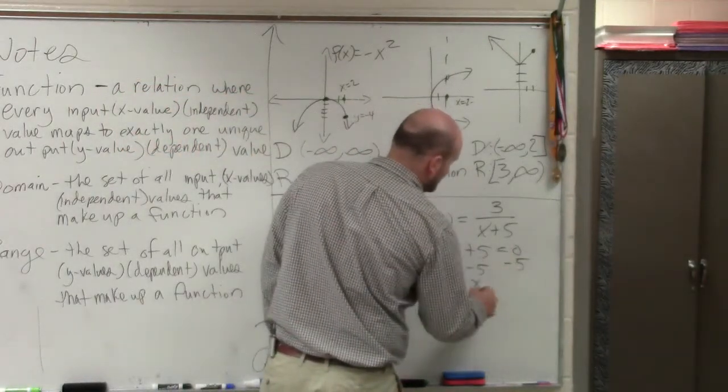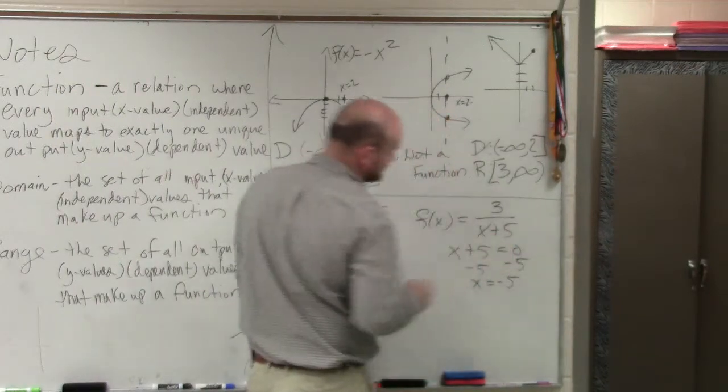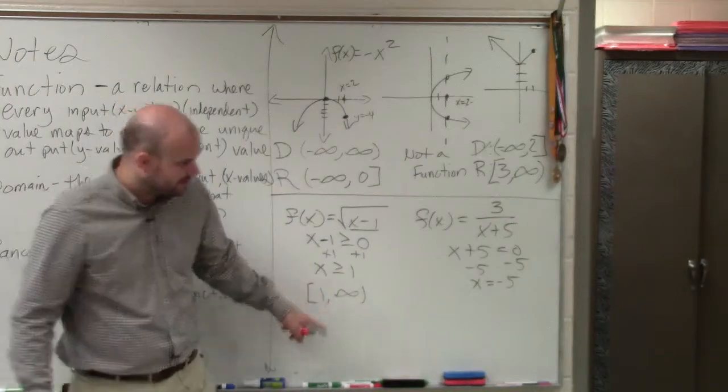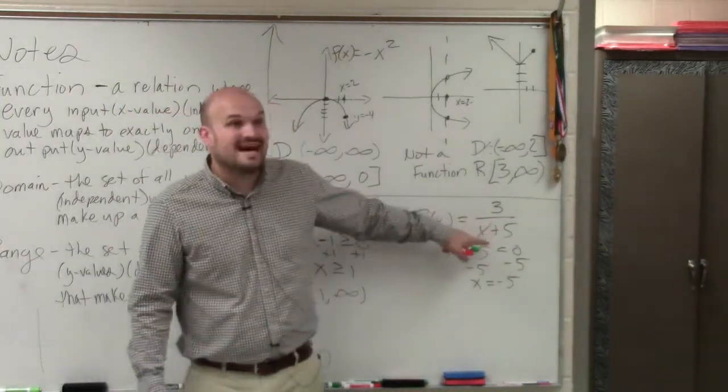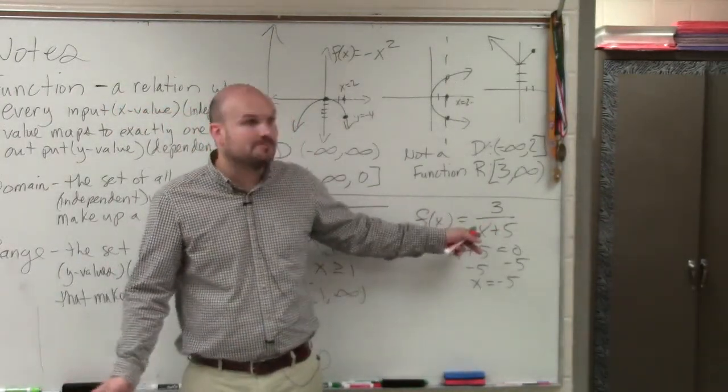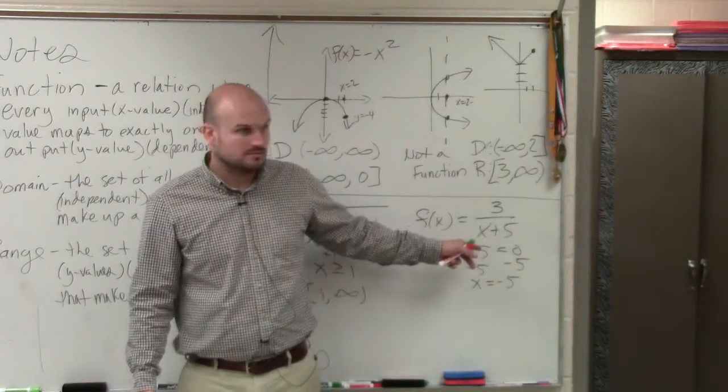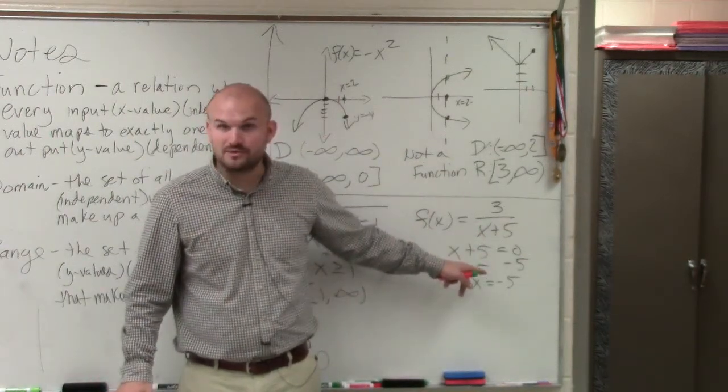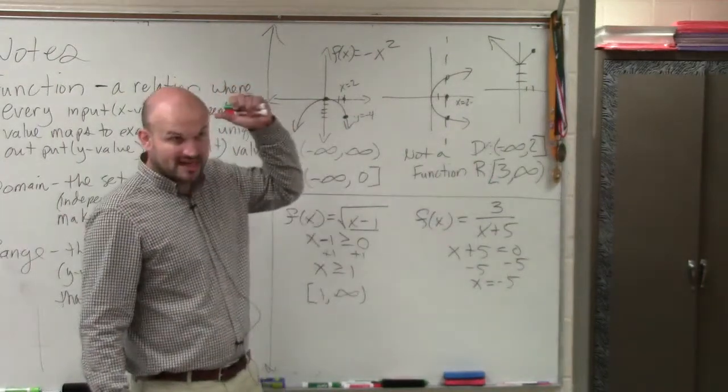Now, if you guys want to look at a confusing way to write this, the way that we're going to write this using my set notation is besides negative 5, is there any other number you cannot plug in for x? No, right? Every other number works except for negative 5 because that makes it zero. So therefore, we can go all the way to negative infinity.